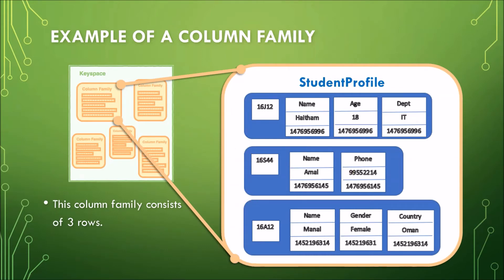As you may have noticed, each row contains a different number of columns. In this first row, we have the column name, age, and department. In this second row, we only have name and phone. And on the third row, we have name, gender, and country.